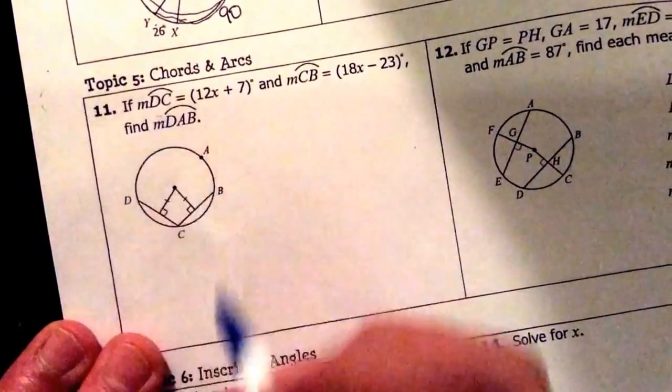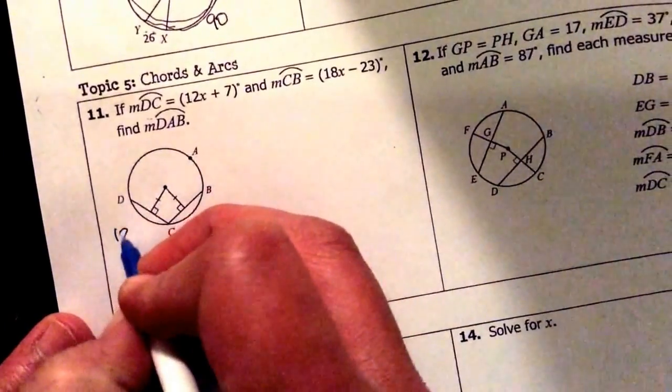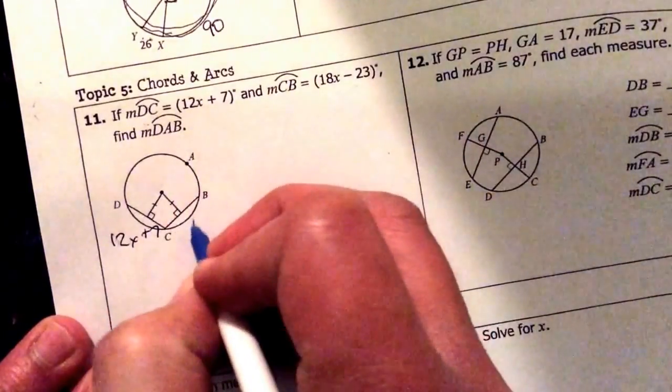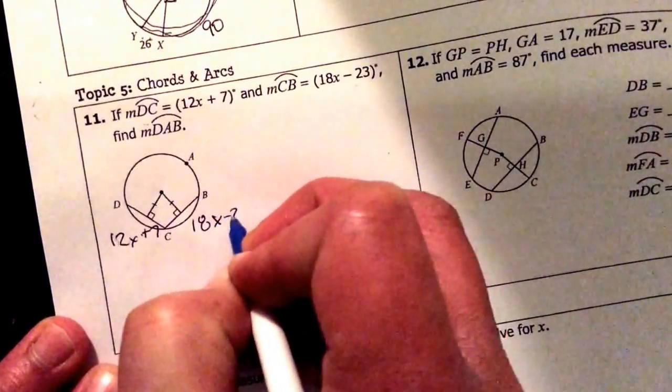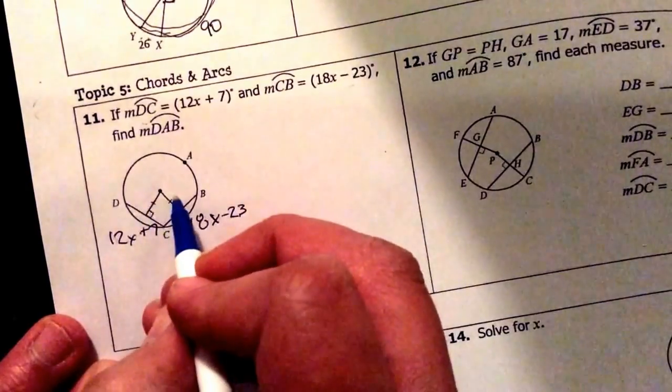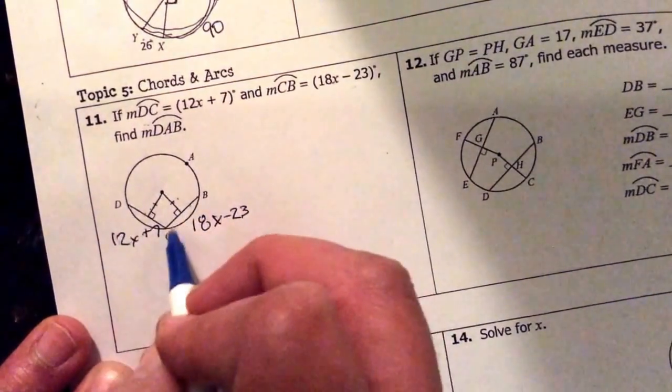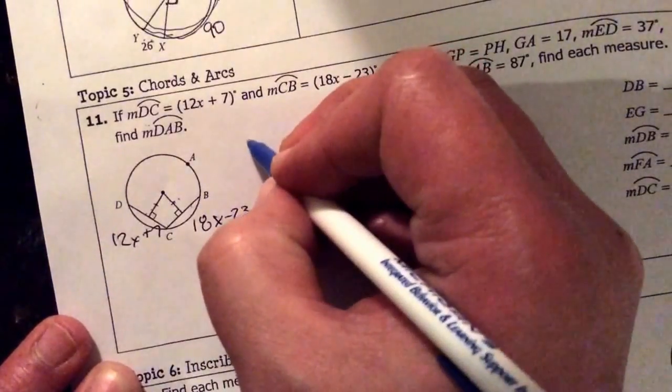Next question. They're telling us DC this arc is 12x plus 7. CB this arc is 18x minus 23. What I do know is that since these are congruent that means the chords are congruent which also means the arcs are congruent. So I'm going to set these equal to each other.